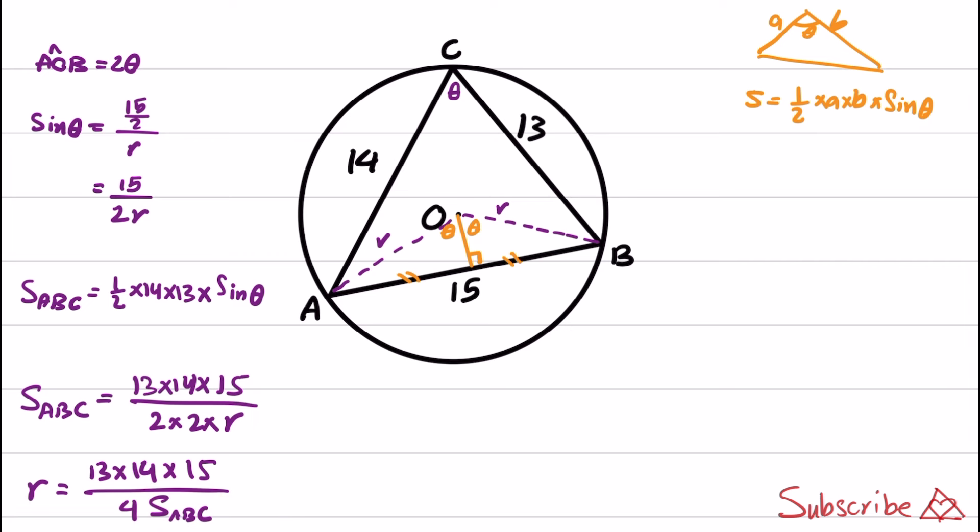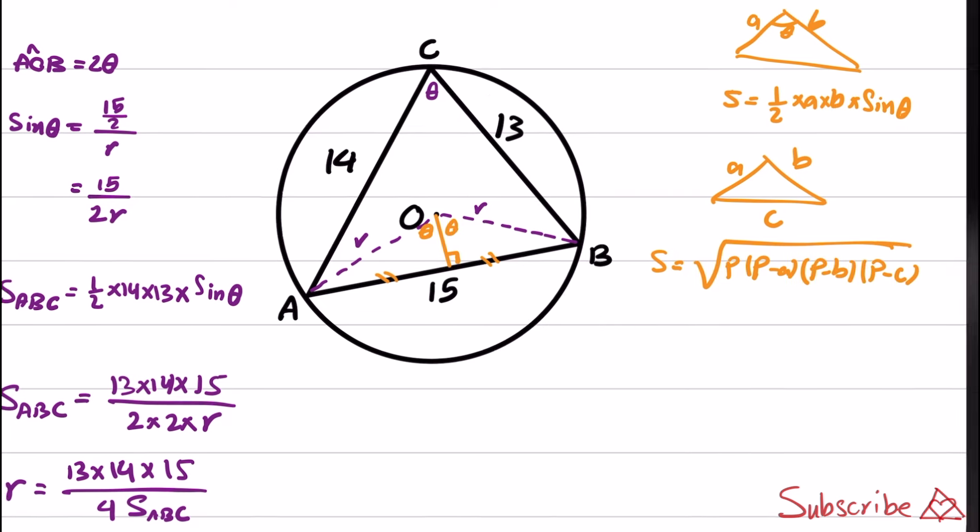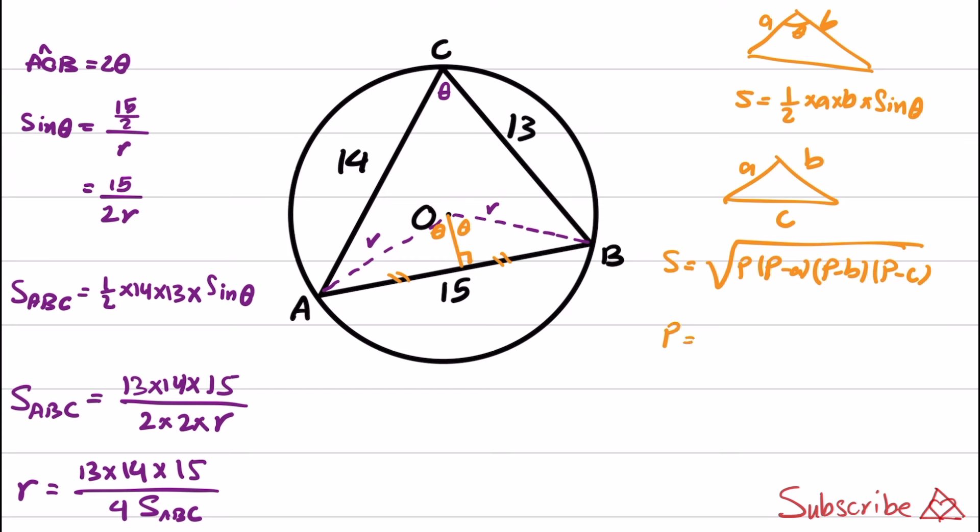To obtain the area of triangle ABC, I'm going to use Heron's formula. Heron's formula says that if we have a triangle, the area is obtained as the square root of P times (P minus A) times (P minus B) times (P minus C), where P is equal to (A plus B plus C) divided by 2.